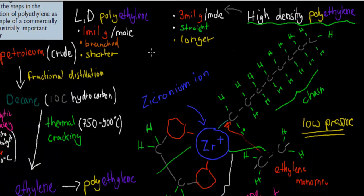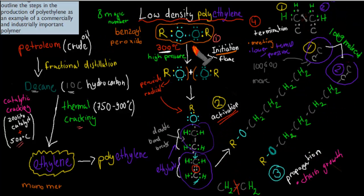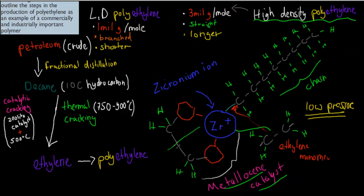Going over the dot point again — 'outline the steps in the production of polyethylene as an example of a commercially important polymer.' For low density polyethylene we had four steps: initiation, activation, propagation, and termination. For high density polyethylene we used a metallocene catalyst with a zirconium ion that grabbed ethylene molecules and made them into a long chain. This is a really important dot point because you can definitely get a short answer question asking you to outline these steps, so make sure you know how to make both high density and low density polyethylene.